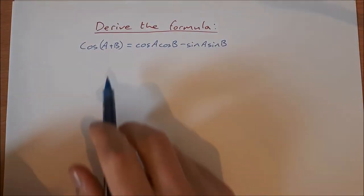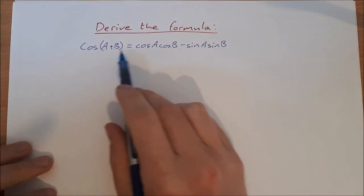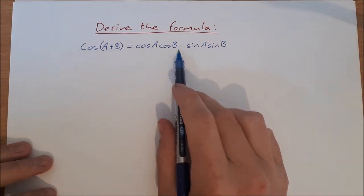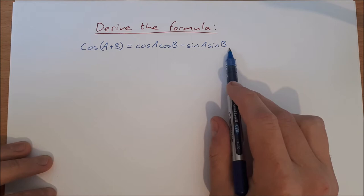Okay, so derive the formula cos of A plus B is equal to cos A cos B minus sin A sin B.